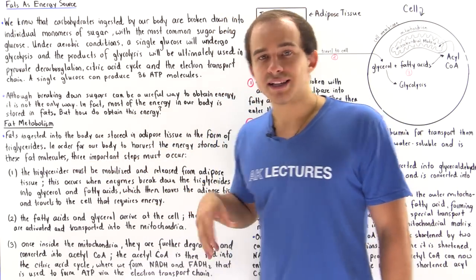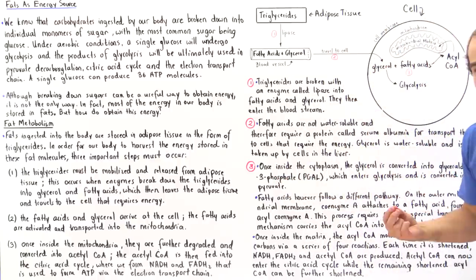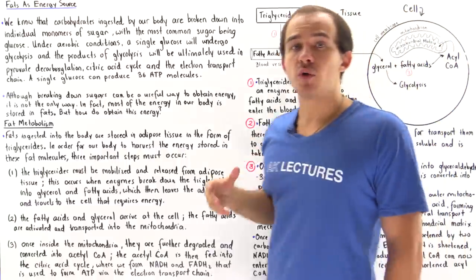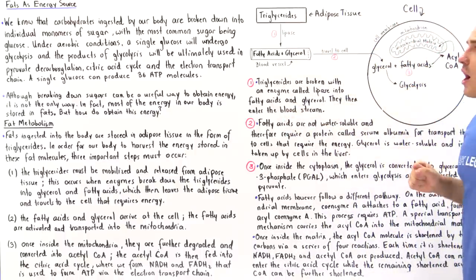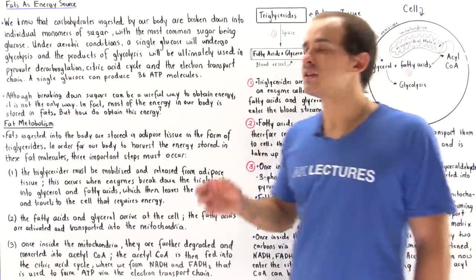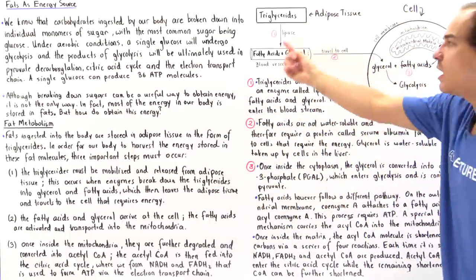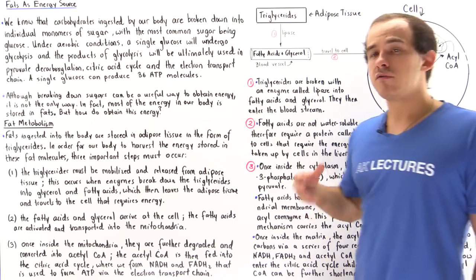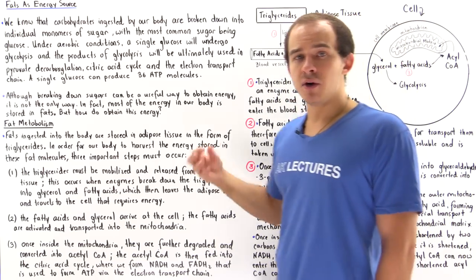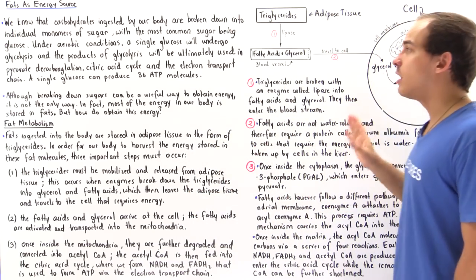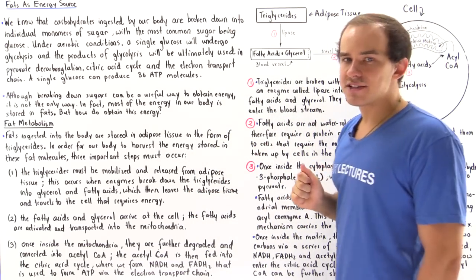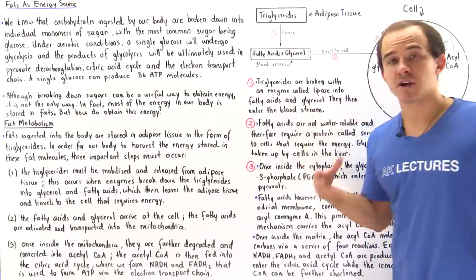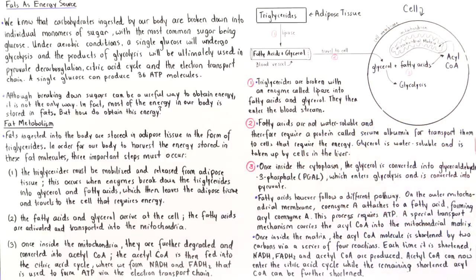In stage one, triglycerides must be released and mobilized from within our adipose tissues. A special enzyme known as lipase breaks down triglycerides into three fatty acids and a single glycerol, and they go into the bloodstream. The bloodstream is composed predominantly of water. Glycerol is water-soluble, but fatty acids are hydrophobic and must attach to a special carrier protein known as serum albumin.